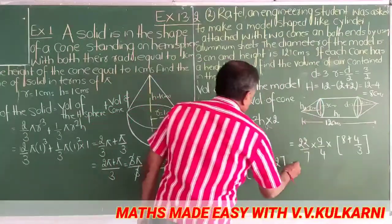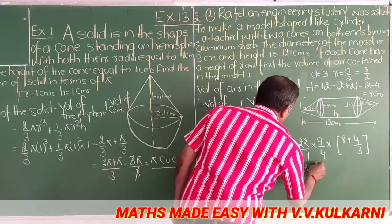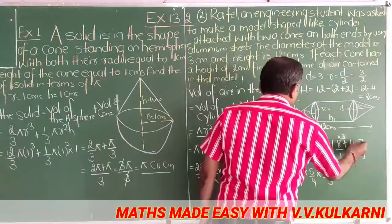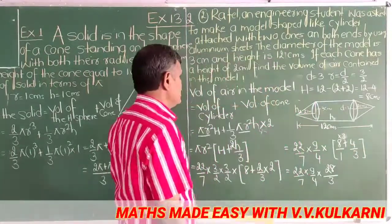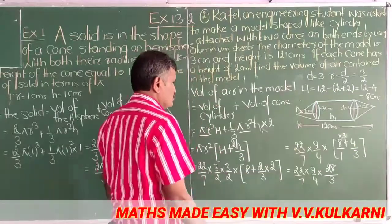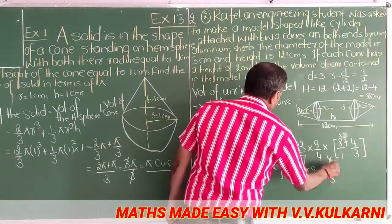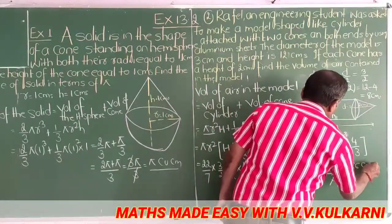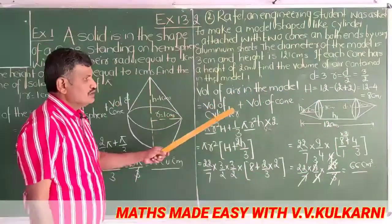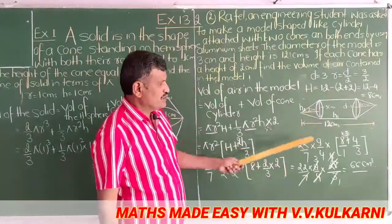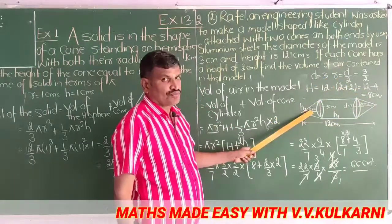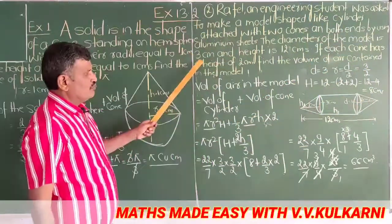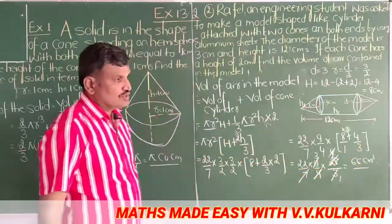Taking LCM of 3: 8 plus 4/3 becomes (24 plus 4)/3 equals 28/3. So we get 22/7 into 9/4 into 28/3. Simplifying: 7 cancels with 28 giving 4, and 9 and 4 cancel, giving 66 cubic centimeter. The volume of air in the model is 66 cubic centimeter. Volume of cylinder plus volume of 2 cones equals the volume of air, and the final answer is 66 cubic centimeter.